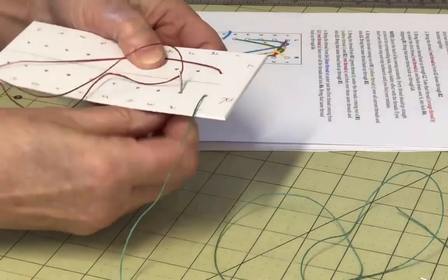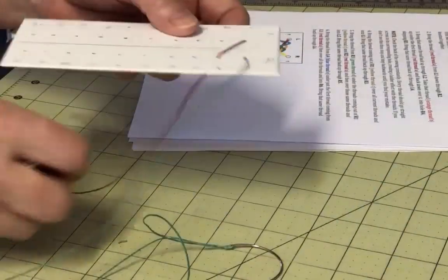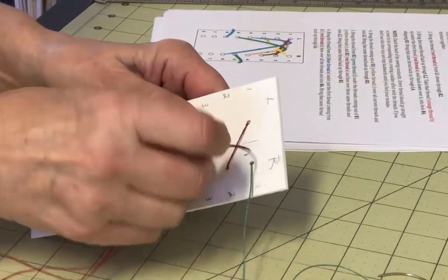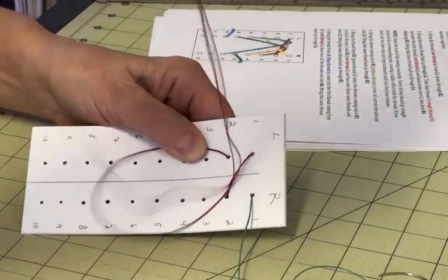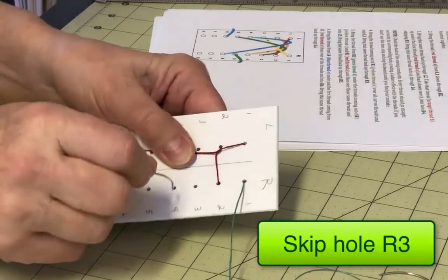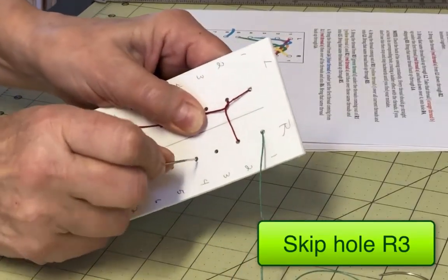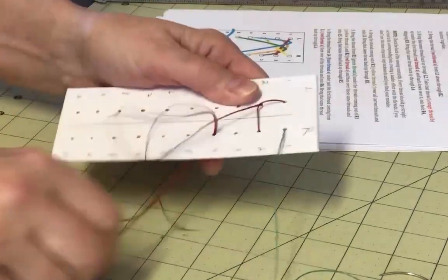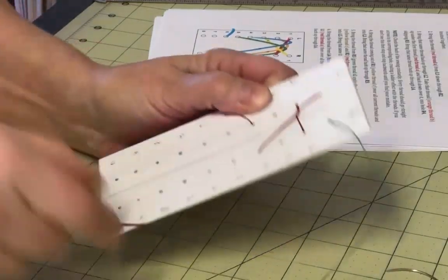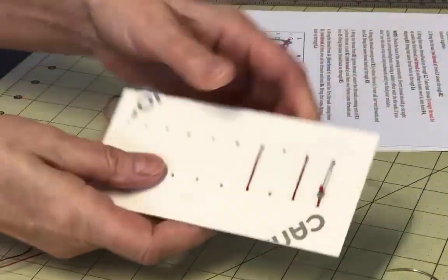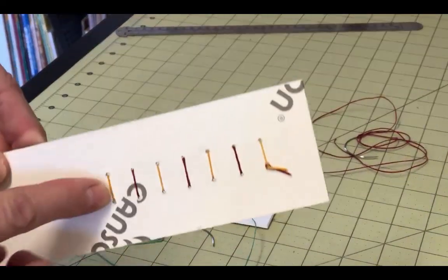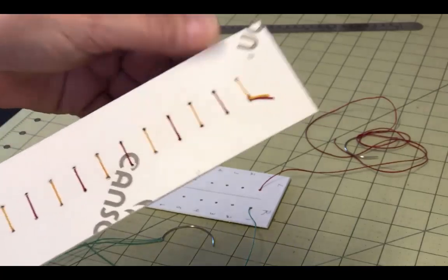To begin, bring the thread coming out of L1 down through hole R2. Take that same thread back up through L2, and then bring it up, under, and over the first thread coming out of L1. Take that thread down into hole R4, skipping R3, and bring it back up through L4. Check the back of the sewing constantly. Every thread on the back should go straight across to its corresponding hole, creating a ladder effect with the threads. If you don't see this, then stop and step backwards until you find your mistake.